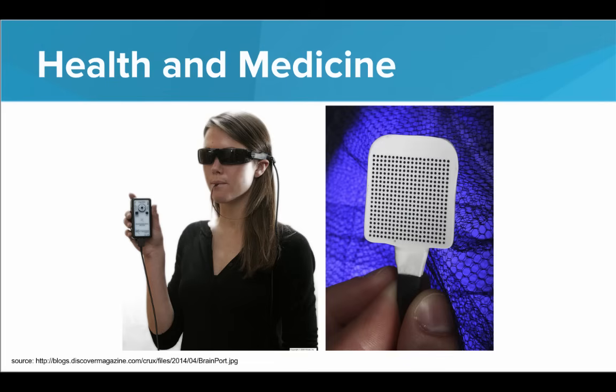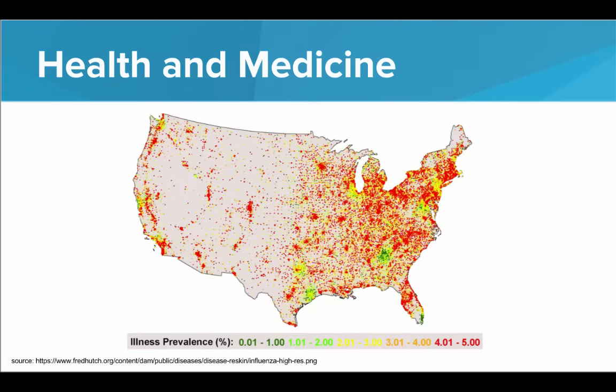Here we have a blind person who is actually able to see thanks to a camera implanted on a pair of sunglasses that is sending signals to the person's tongue. We're also able to model outbreaks of disease thanks to technology. We can gather data from people all over the world, try to track the symptoms, and try to prevent widespread outbreak of disease.